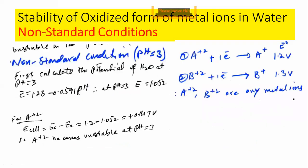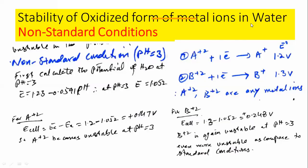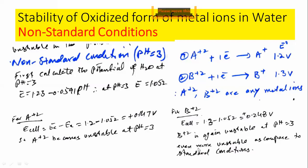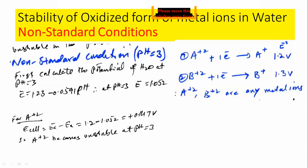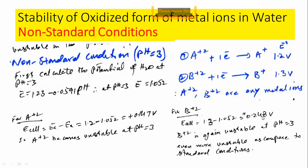For B²⁺ at pH 3: E_cathode is 1.3 V, E_anode (water at pH 3) is 1.052 V, giving +0.248 V. B²⁺ is unstable at pH 3 and even more unstable compared to standard conditions. The difference at standard conditions was only 0.07 V, but decreasing pH to 3 increases the positive value to 0.248 V — meaning it is more spontaneous and therefore more unstable than at standard conditions.